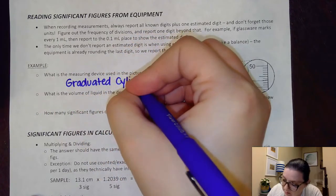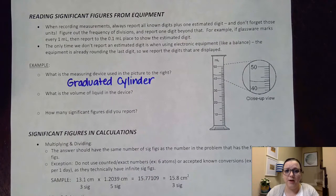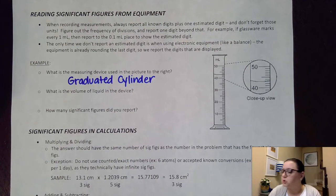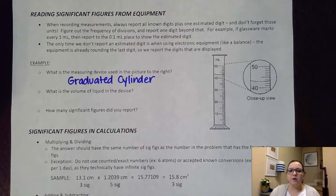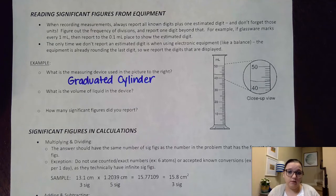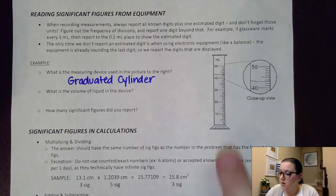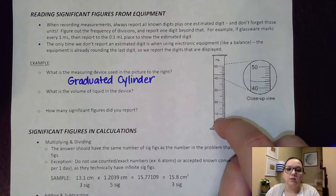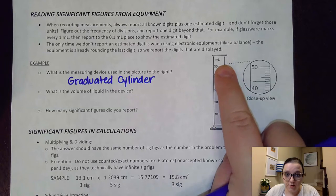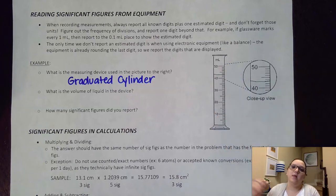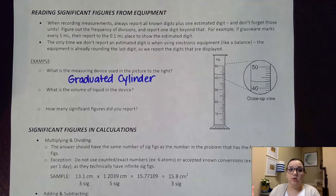Another piece of glassware we use a whole lot in AP Chemistry is a burette. A burette is very similar to a graduated cylinder, except the numbering system is flipped because it tells us how much liquid we have dispensed. A nice way to tell if I have a graduated cylinder versus a burette is to look which direction the numbers are counting. Here I'm bigger at the top and smaller at the bottom — that's a graduated cylinder. If I'm smaller at the top and bigger at the bottom, that would actually be a burette.